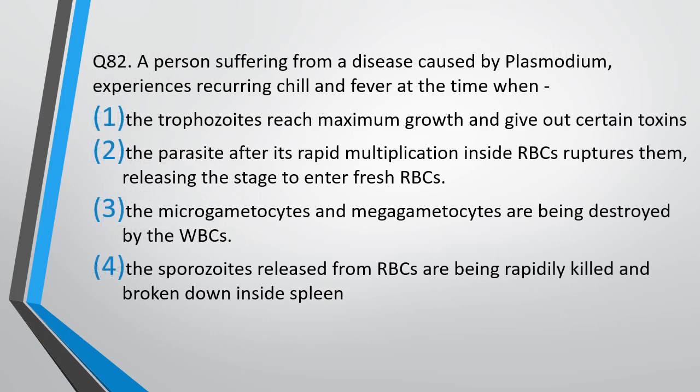Question number 82. A person suffering from disease caused by Plasmodium experiences recurring chills and fever at the time when the trophozoite reaches maximum growth and gives out certain toxins. The parasite, after its rapid multiplication inside RBC, ruptures them, releasing the stage to enter fresh RBCs. The microgametocytes and megagametocytes are being destroyed by the WBC. The sporozoites released from RBCs are being rapidly killed and broken down inside the spleen.